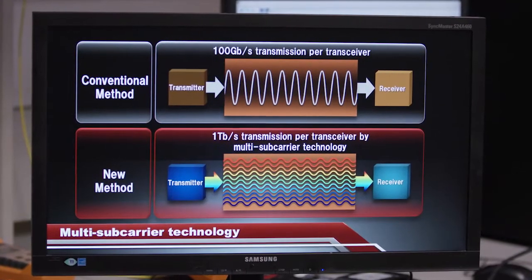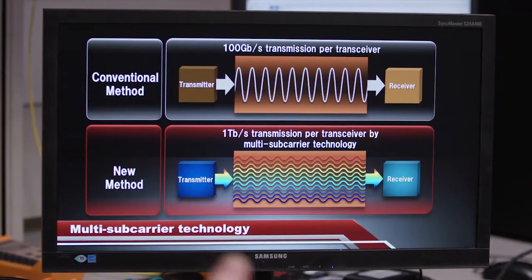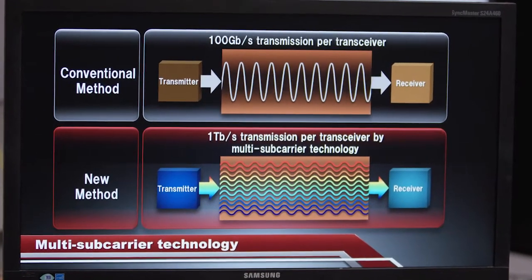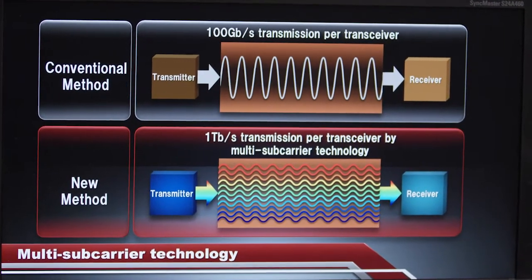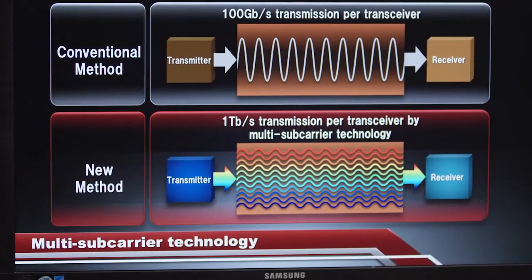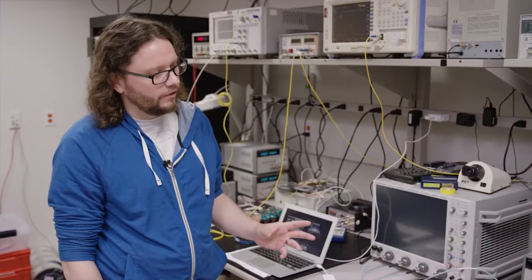So then this is our new method. In order to achieve one terabit per second, we're transmitting 11 wavelengths now instead of one, and the reason that we're doing this is twofold.